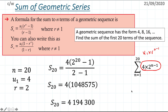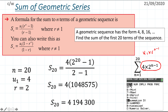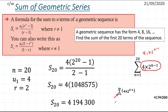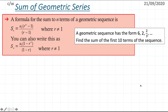This sigma notation is useful for checking your answer on a calculator. Press the math button, go to summation sigma, and enter the expression. Use the X variable (found on the X-theta button), set it from 1 to 20, and enter 4 times 2 to the power of (X minus 1). Press enter and it will compute the summation so you can verify your answer.